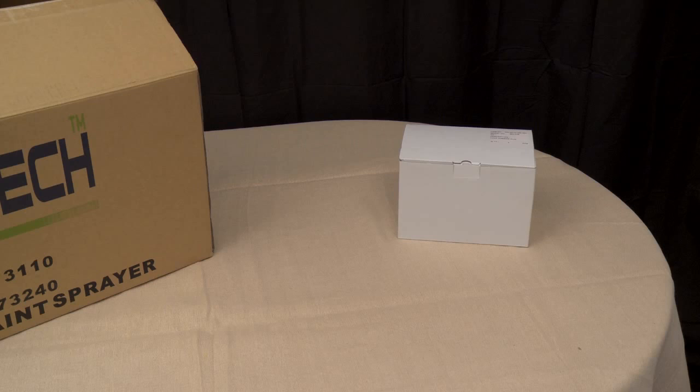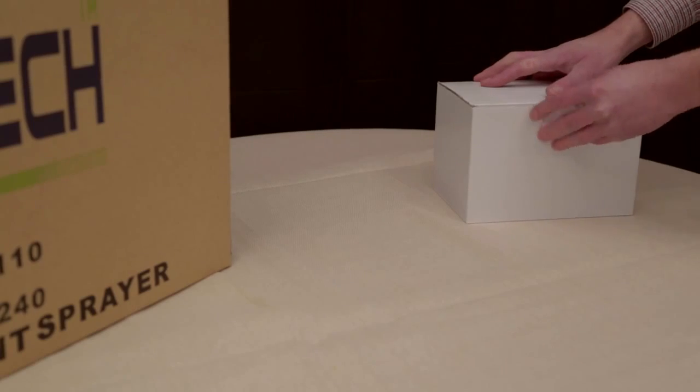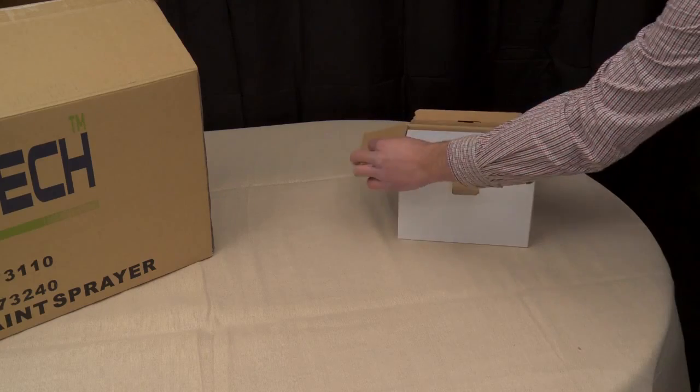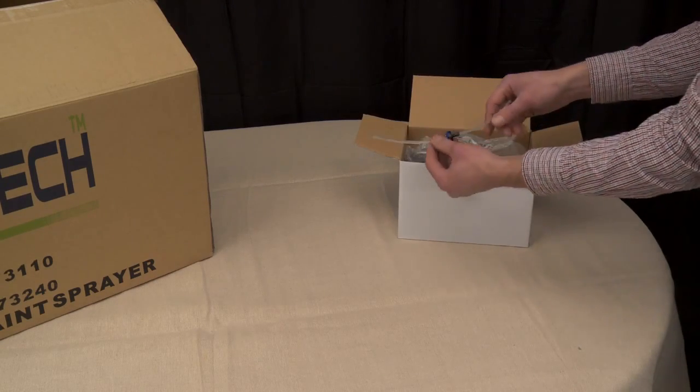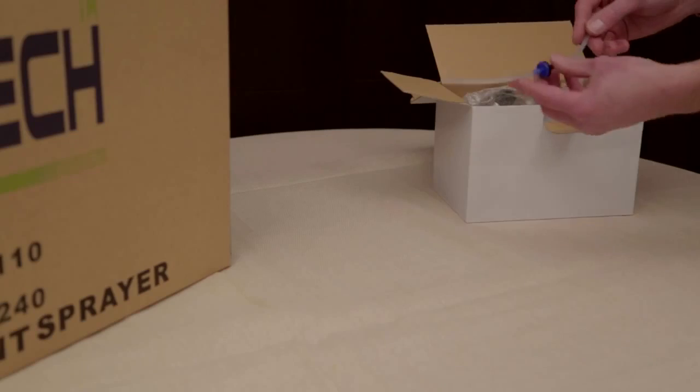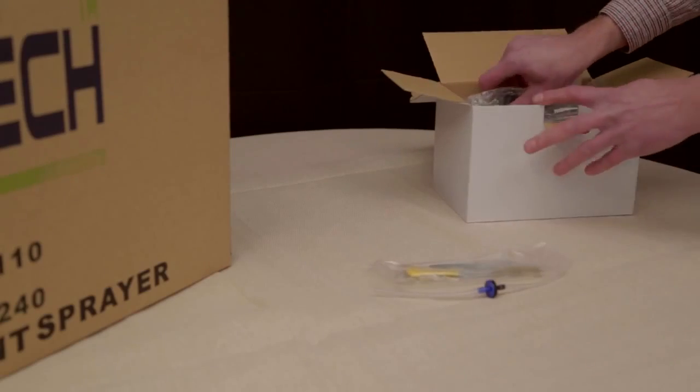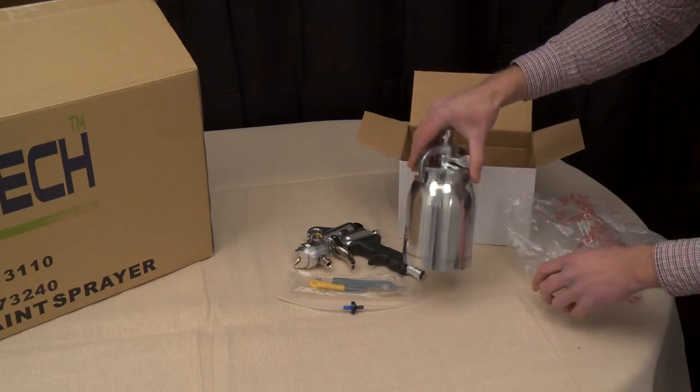To start setup, first start with assembling the spray gun. This is a relatively straightforward process, but some important points are needed to be followed to make sure the unit operates correctly. The components in the spray gun box are as follows: the vent tube assembly, the toolkit, the spray gun head, and the paint cup.